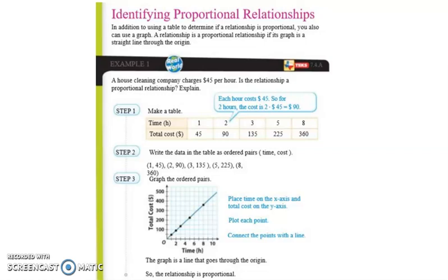All right, today everybody, we're going to be talking about 7.4a, that's the TEKS stats there on the screen, identifying proportional relationships.